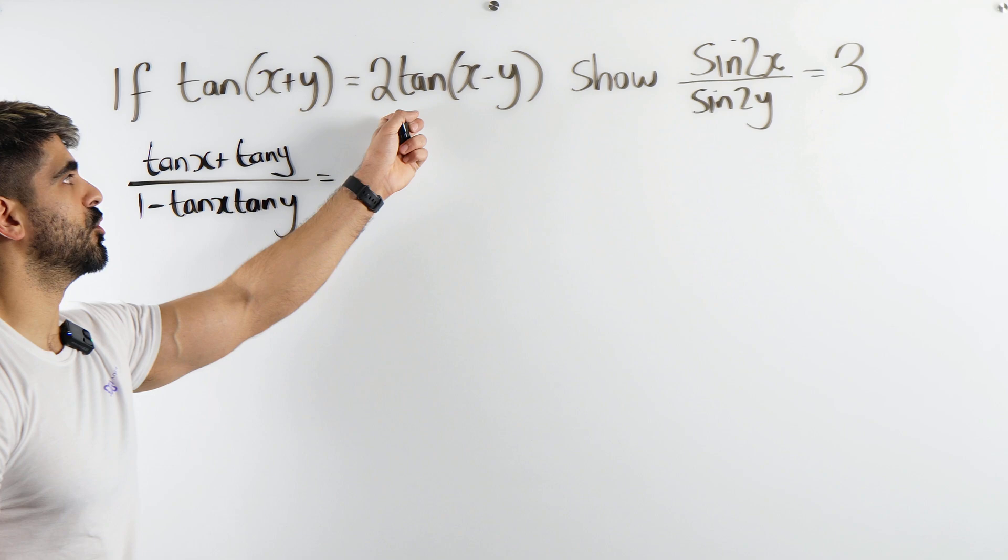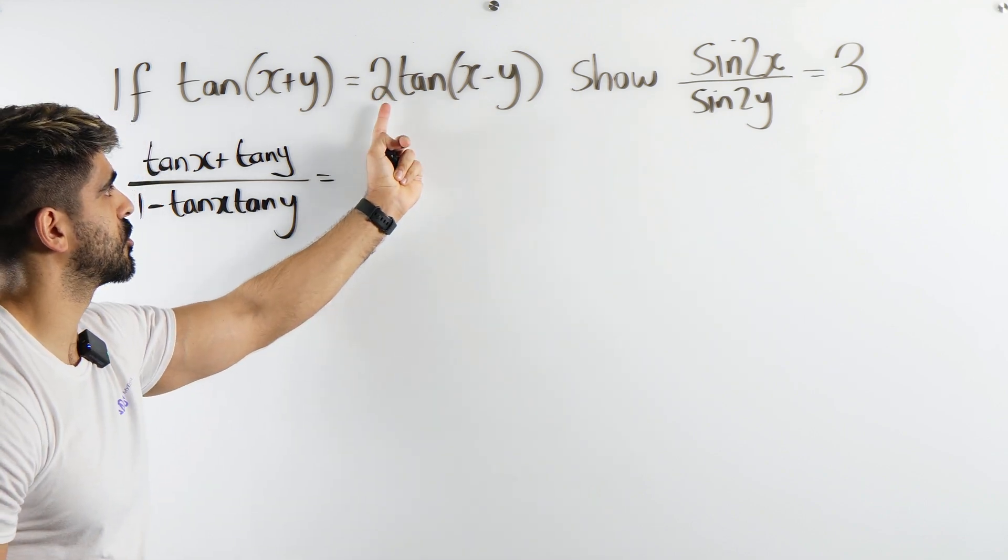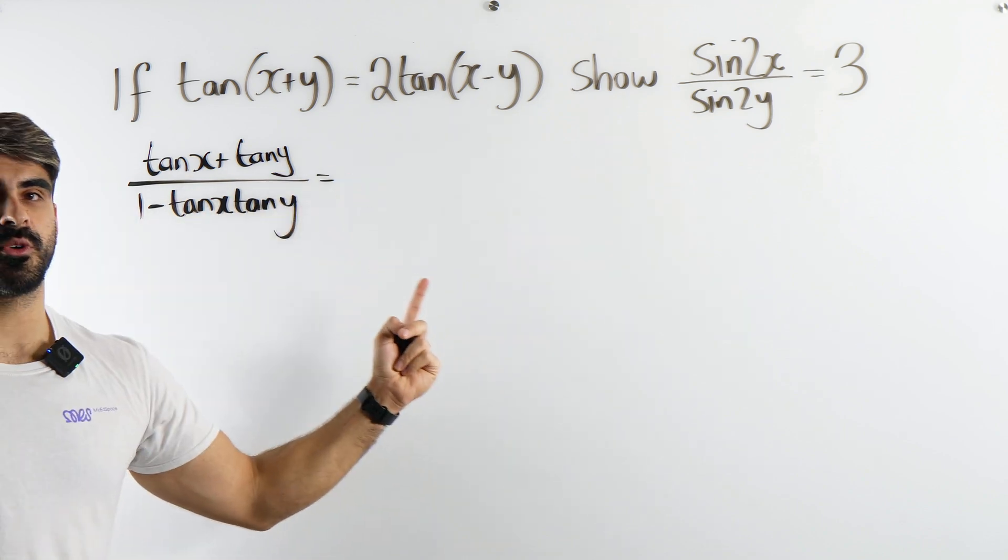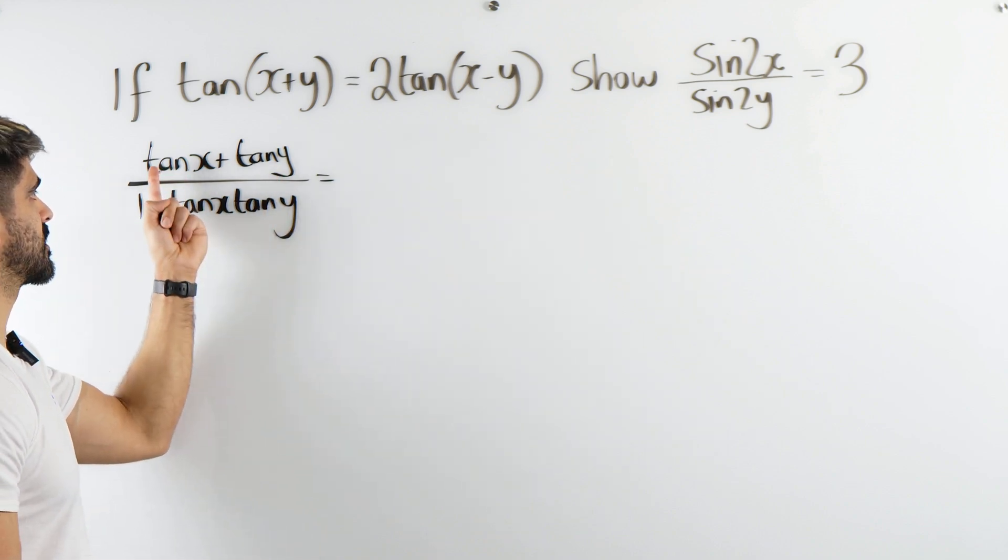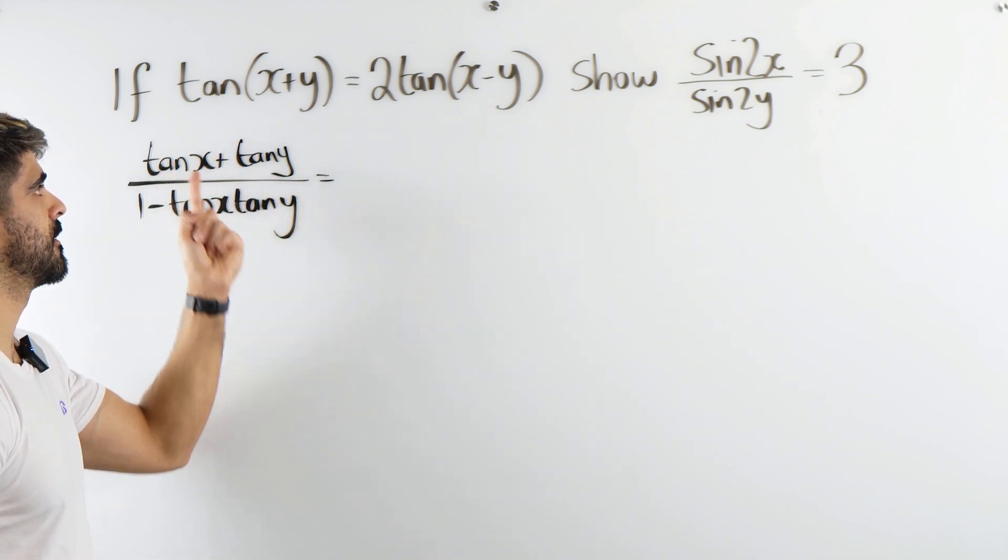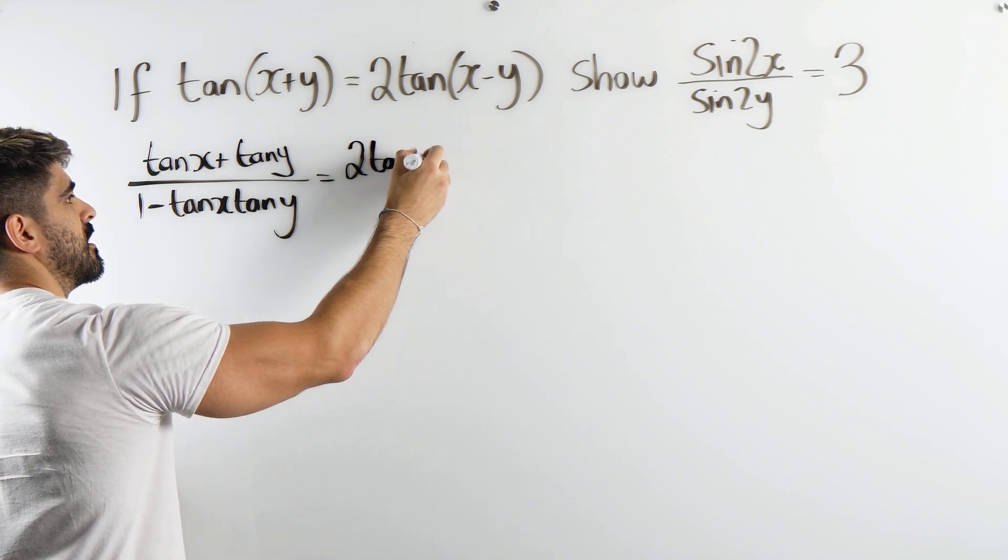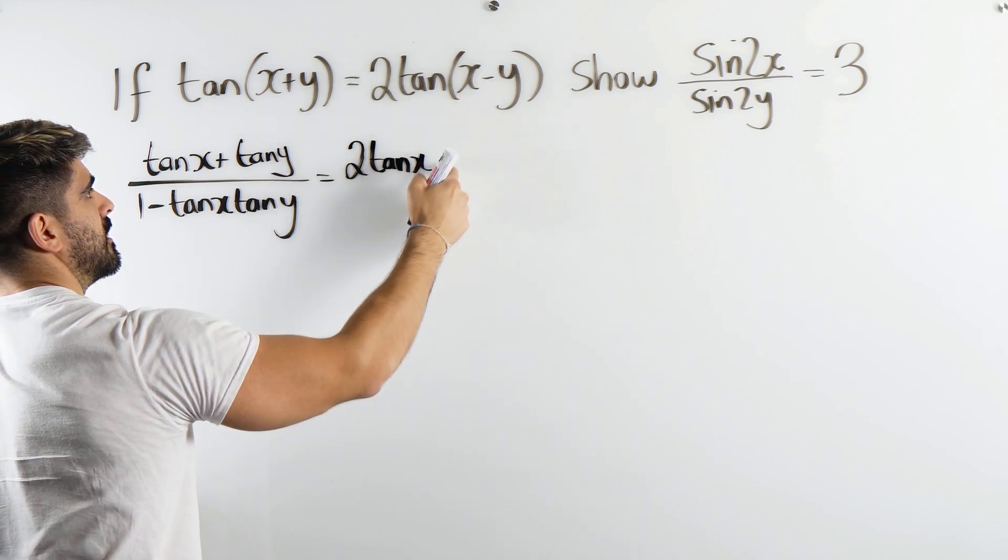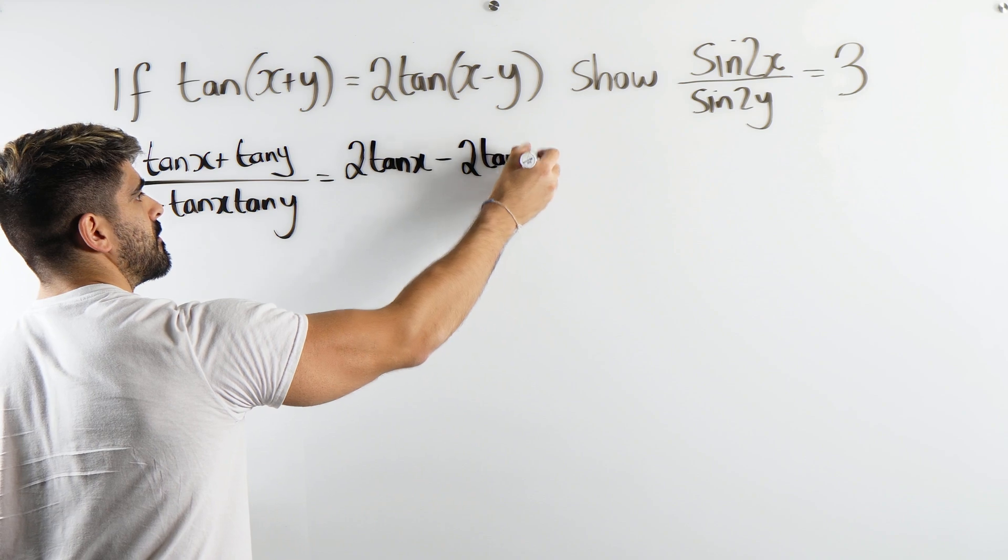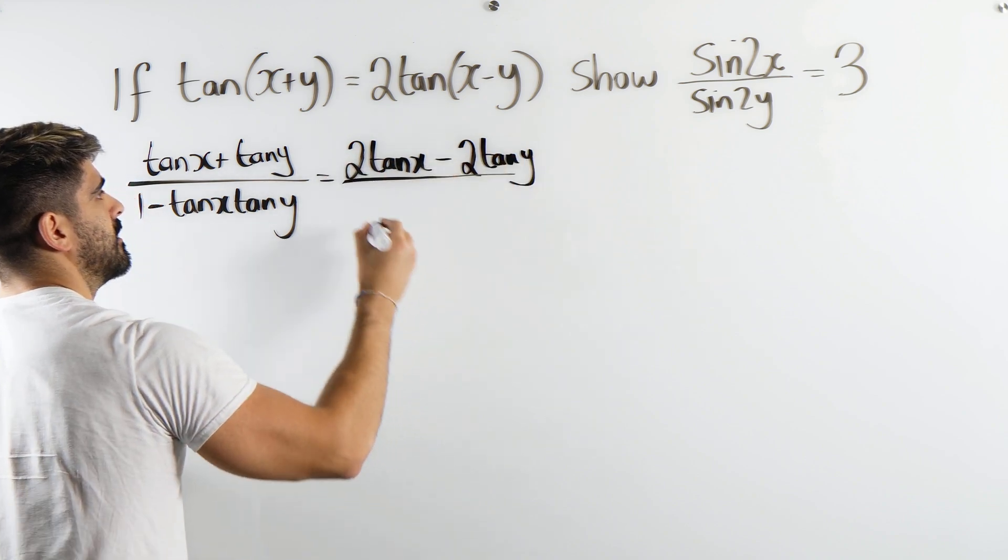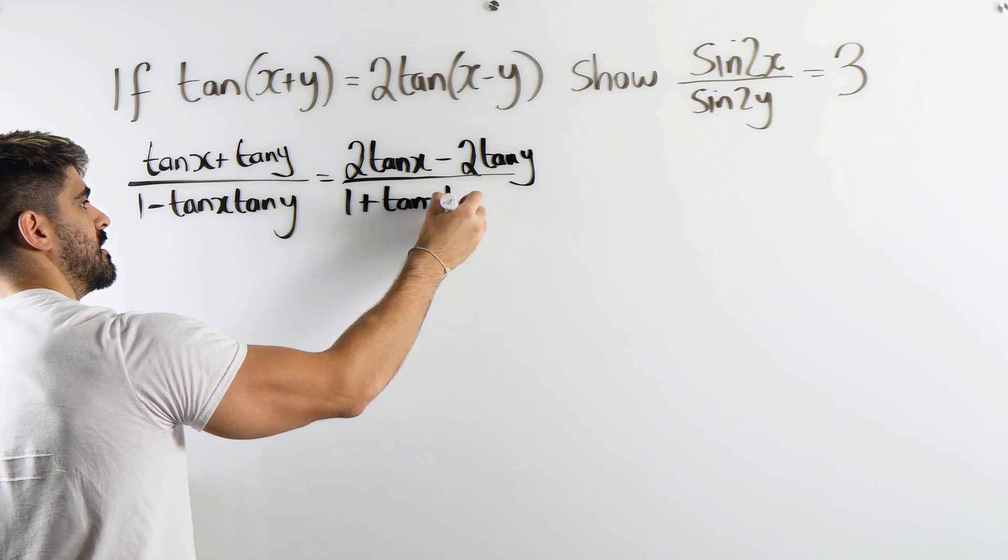Now 2, remember when you multiply, obviously this is a fraction right, the 2 is going to multiply with the numerator, it's 2 over 1. And when you multiply with the numerator it's going to multiply both of these terms. So we're going to get 2 tan x, remember on the numerator it keeps the sign, minus 2 tan y divided by 1 plus tan x tan y.